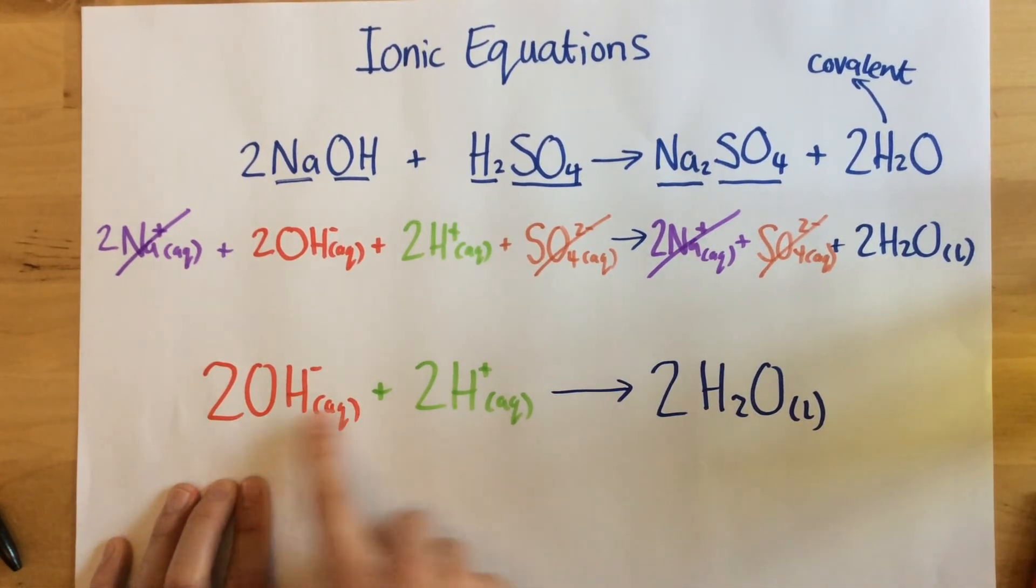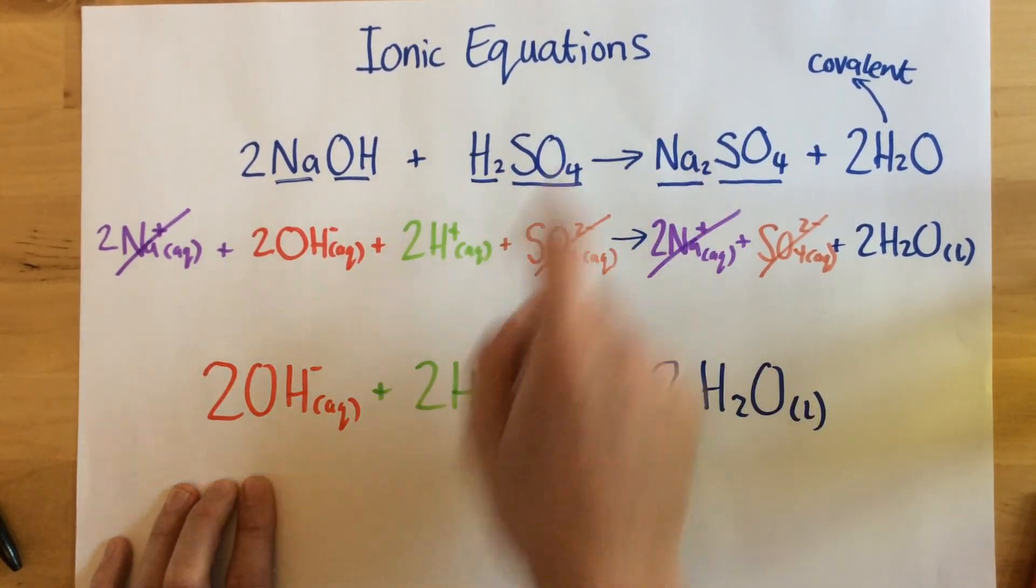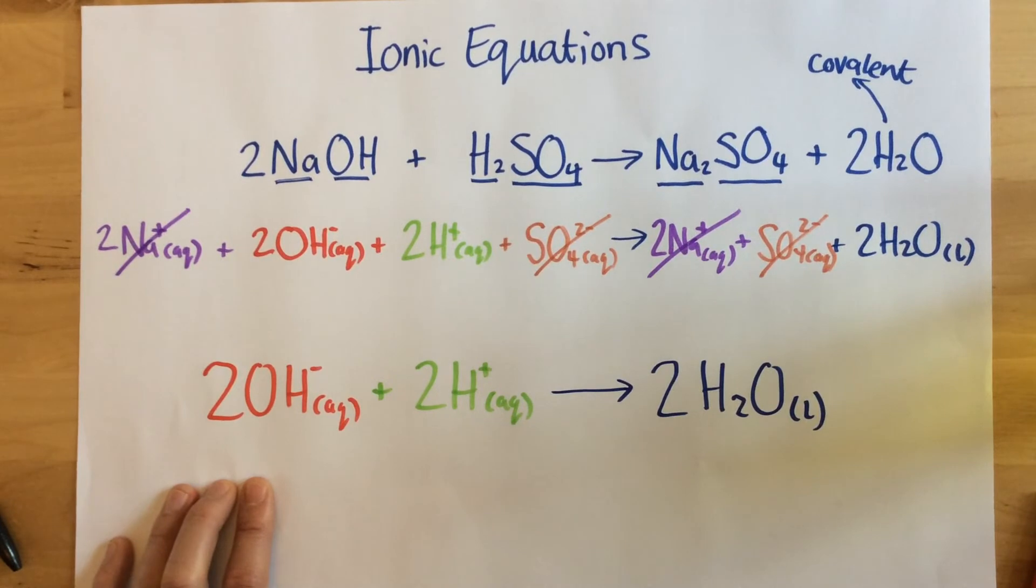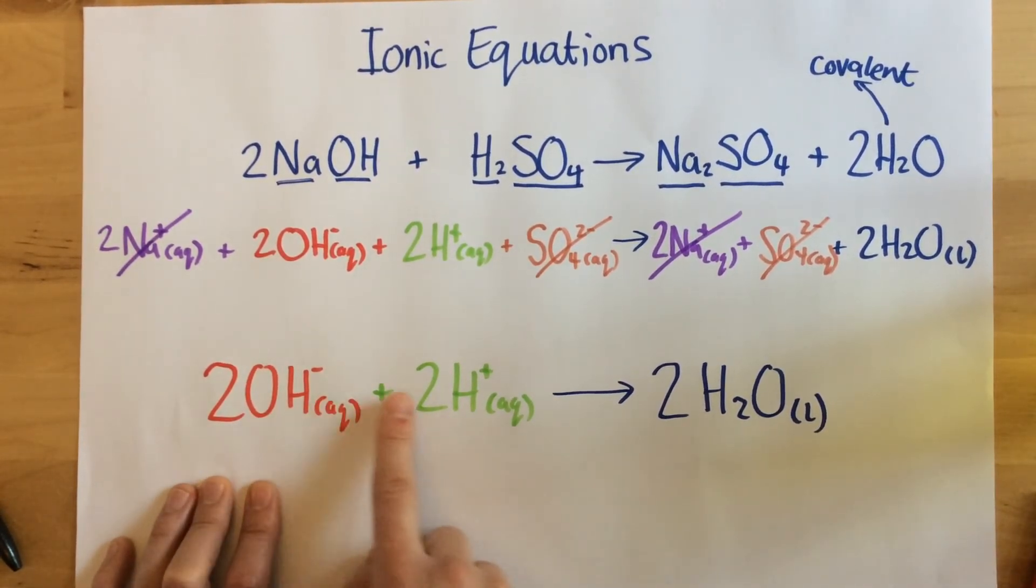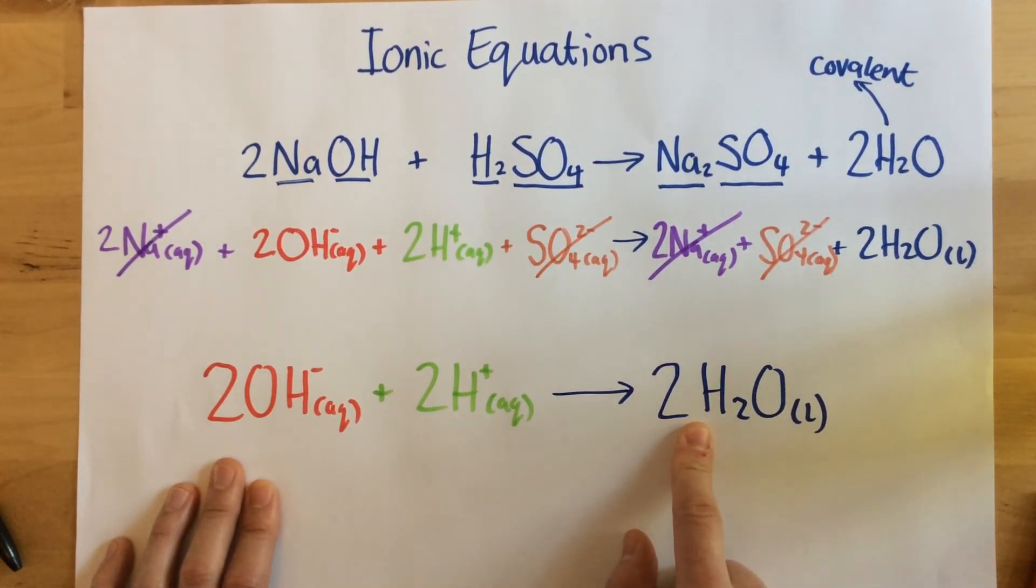So I've cancelled out the ions that are the same on both sides of the equation, and this is what I'm left with. So this is the ionic equation for this here, and this particular one is an example of a neutralisation reaction, because I have hydroxide and hydrogen ions to form water.